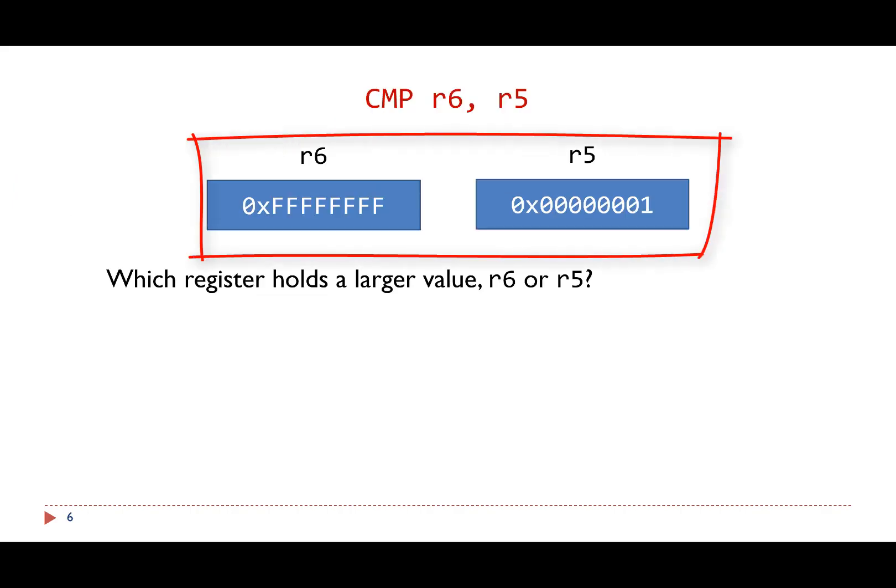Suppose the register R6 and R5 have these values. When the processor executes the comparison instruction, does the processor know which register holds a larger value? Surprisingly, the answer is no.